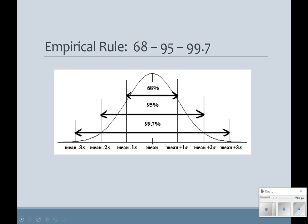We have this thing called the empirical rule that says 99.7% of all data falls within three standard deviations of the mean, whether it's above or below. This is called a normal curve — it's bell-shaped. Some places use S for standard deviation; we use the lowercase Greek letter sigma for standard deviation.